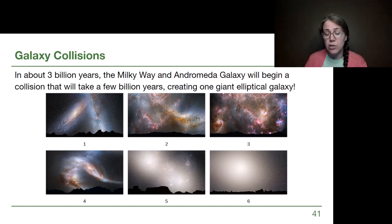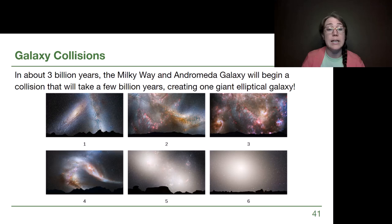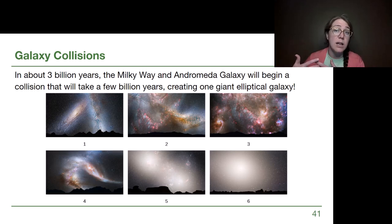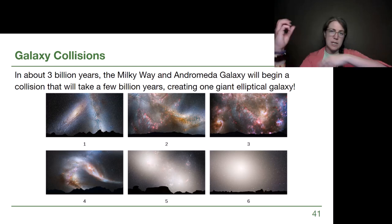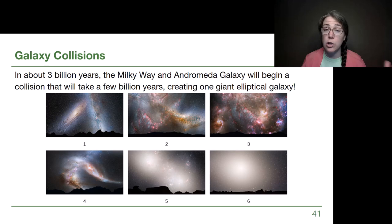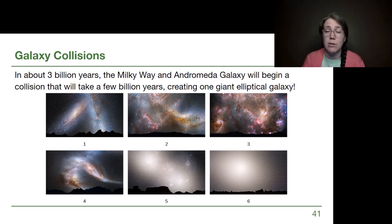Elliptical galaxies can definitely come out of mergers, and it's worth noting that this is going to happen to us. The Milky Way galaxy is on track to collide with Andromeda in about three billion years. As big clouds of gas and dust hit each other, giant molecular clouds will make a whole bunch of new stars — but individual stars are not actually going to run into each other, since there's so much empty space between them. Eventually when the dust settles, there won't be gas and dust left — just hundreds of billions of stars in a blob.